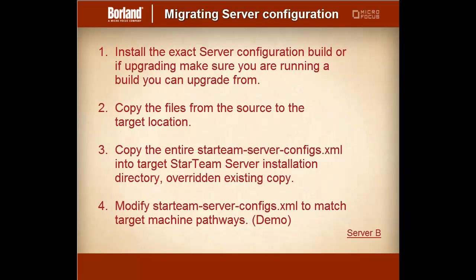Firstly, install the server configuration build, or if upgrading, make sure you are running a build you can upgrade from. Step 2: copy the files from the source to the target location. Step 3: copy the entire StarTeamServerConvix.xml into the target StarTeam Server installation directory, overwriting the existing copy. Step 4: modify StarTeamServerConvix.xml to match target machine pathways, and I will now demonstrate the paths to change.